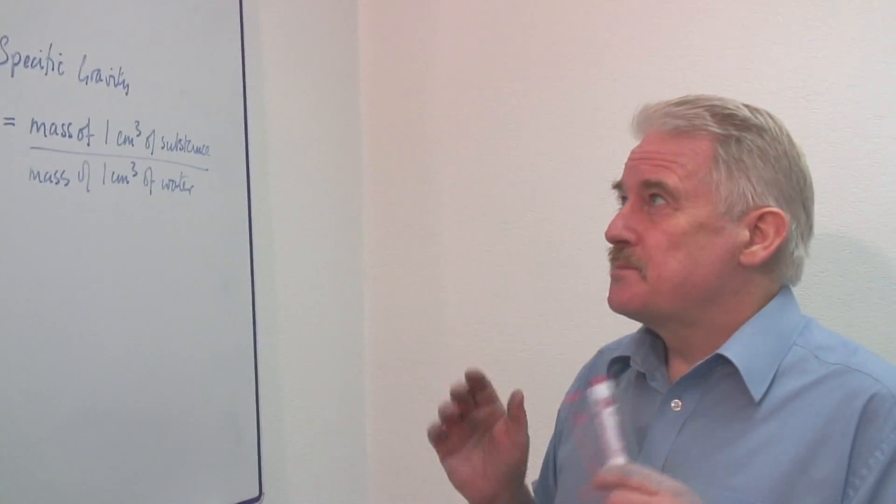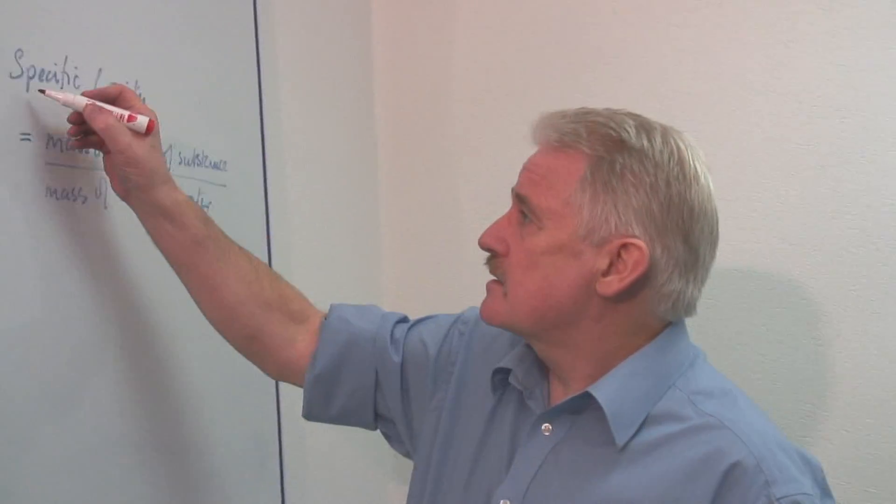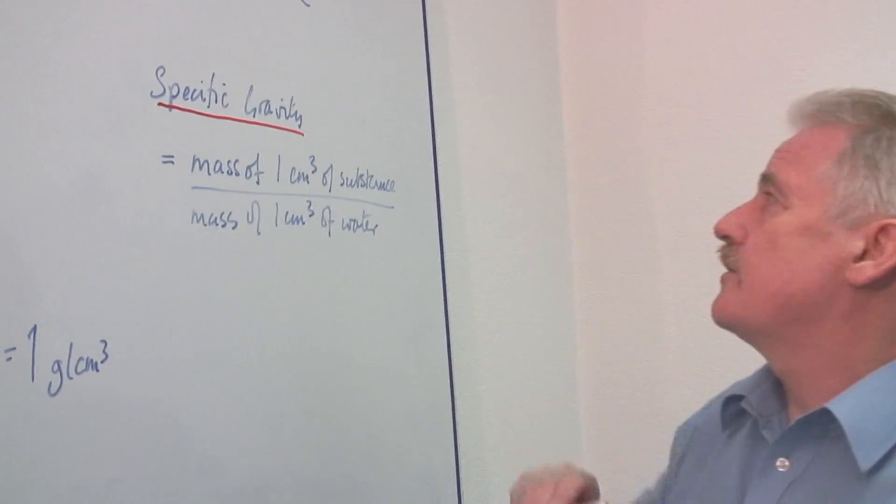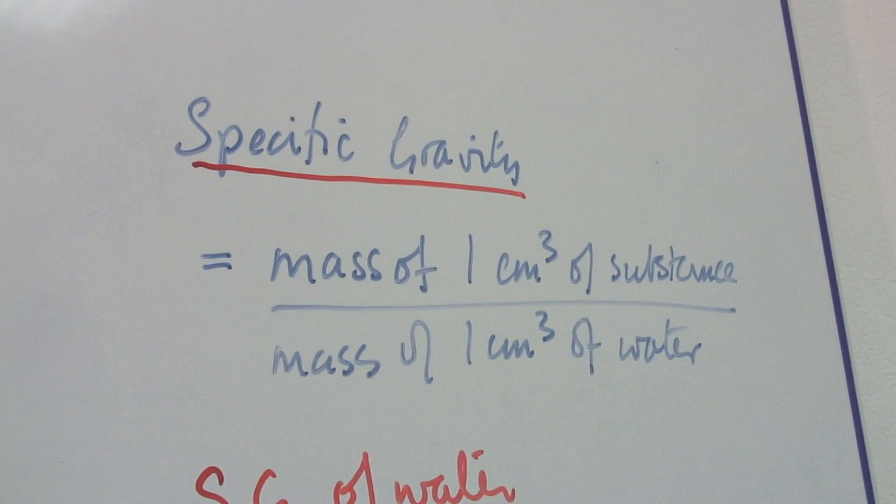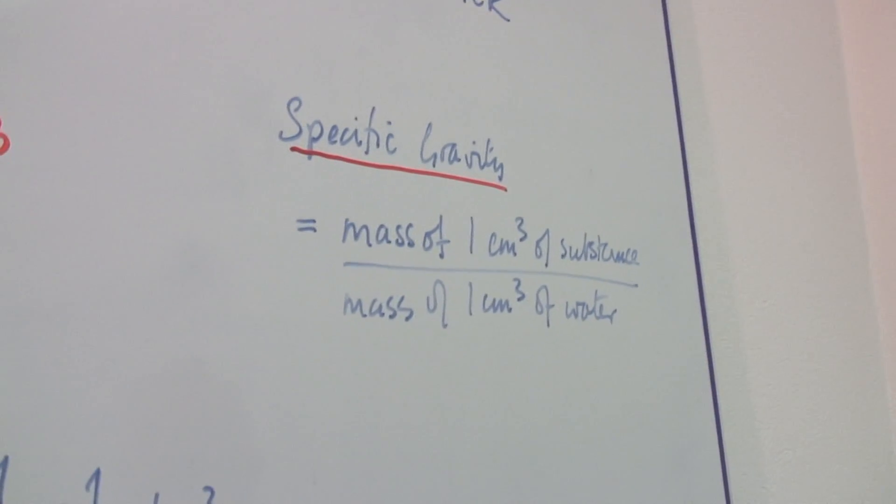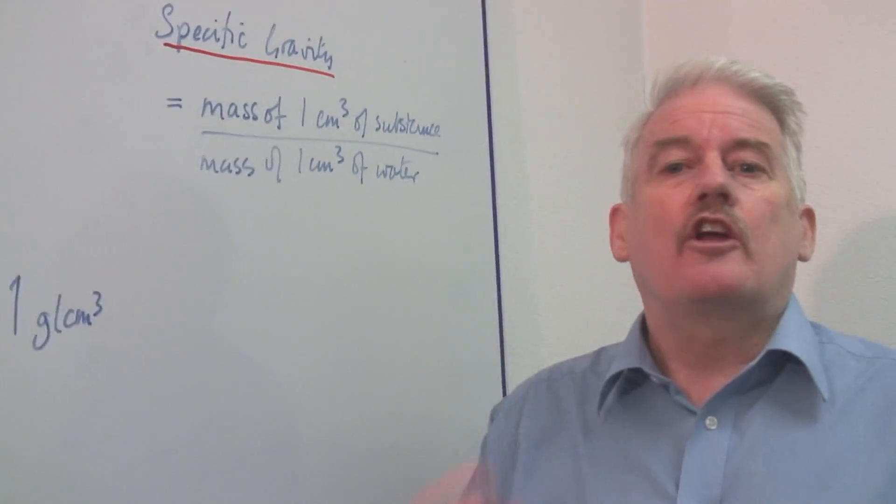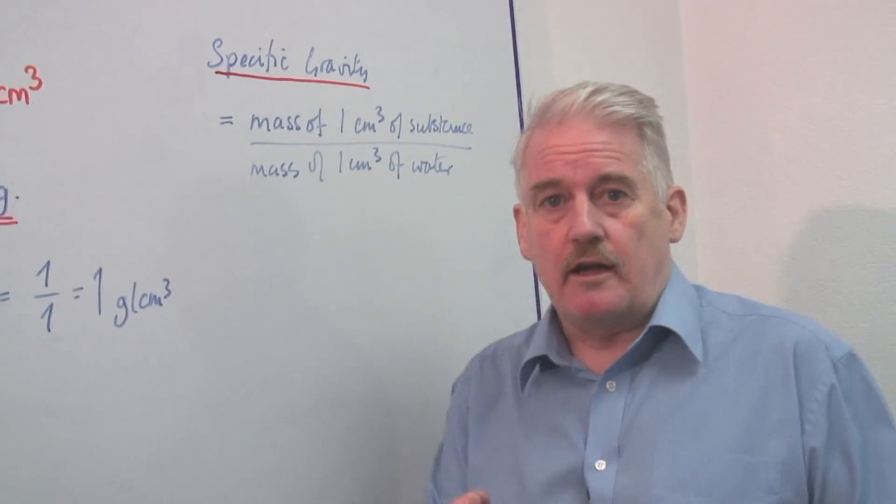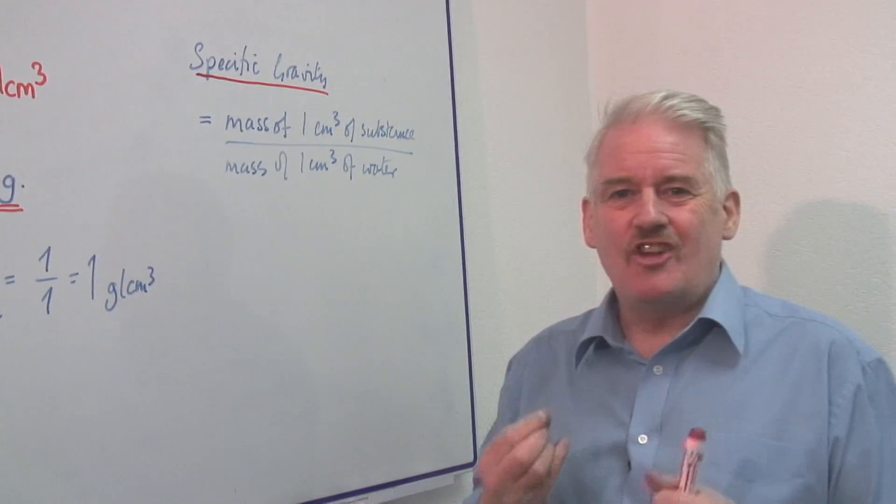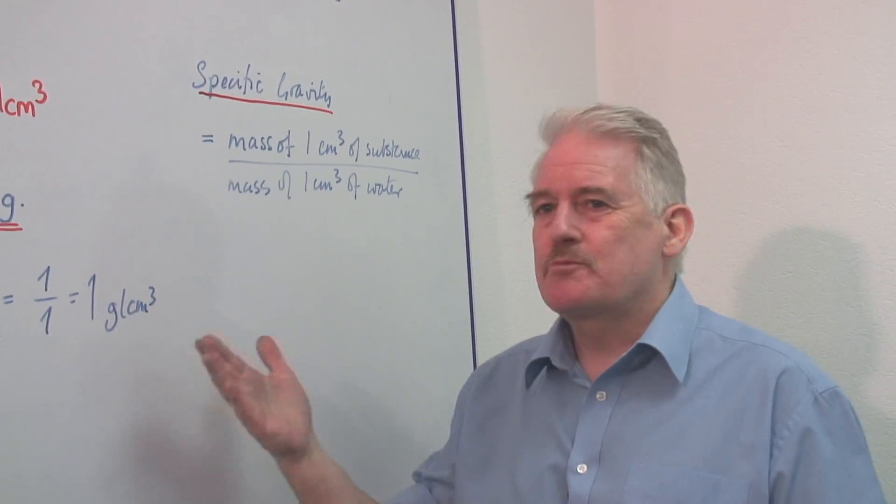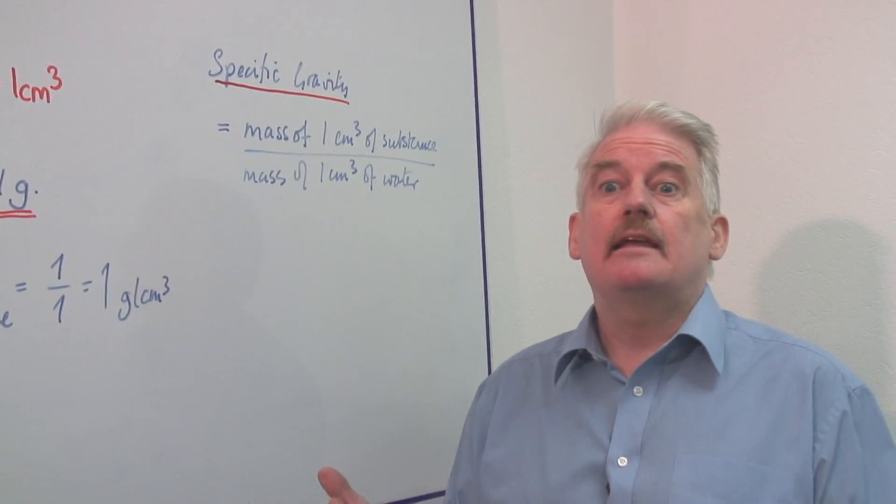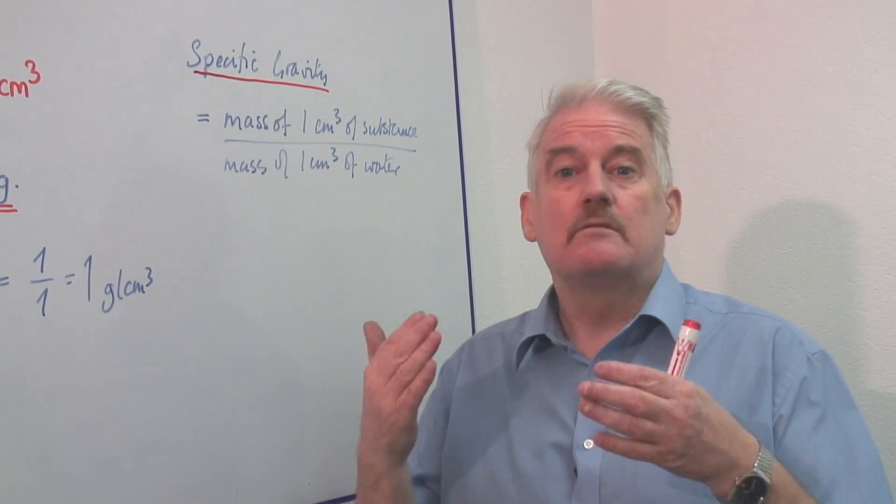Now specific gravity as such is slightly different from density and much more useful. Because specific gravity tells us how much heavier some material is compared to water. So it is not how many grams per centimeter cubed. It is a number. It is a ratio.